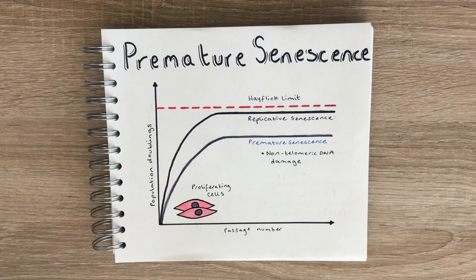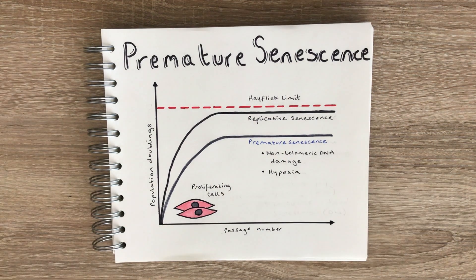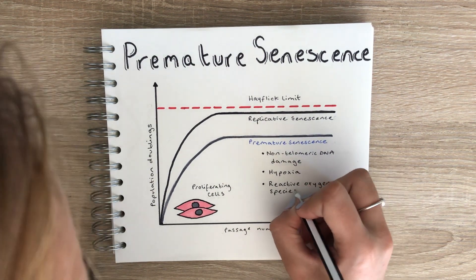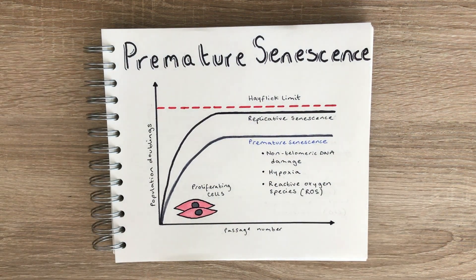Other cellular stressors can also give rise to senescence if they continue for a prolonged period of time. Stress-induced senescence can be due to things like hypoxia — a state defined by the reduction or lack of oxygen — or it could be induced by an increase in reactive oxygen species, or ROS. ROS are chemically reactive species of oxygen, and their levels have to be carefully maintained because an increase in ROS can lead to oxidative stress, involving species such as superoxide, peroxide, or singlet oxygen.